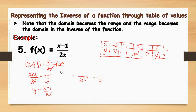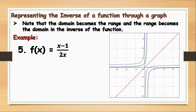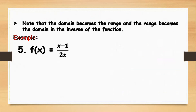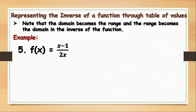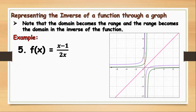That will be our table of values for the inverse of the function x minus 1 all over 2x. Let's check the graph to verify it is undefined at x equals 0 — that it doesn't meet at x equals 0. This green one is our function, and this violet one is the inverse. As you can see, it doesn't cross at x equals 0, confirming it is undefined there.